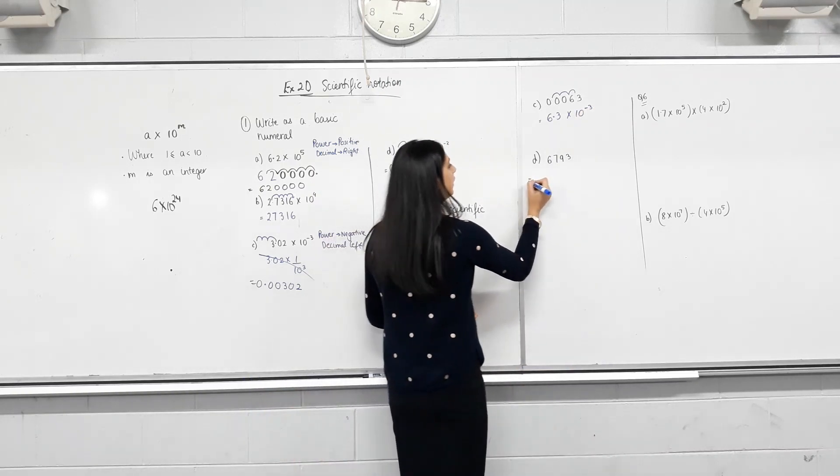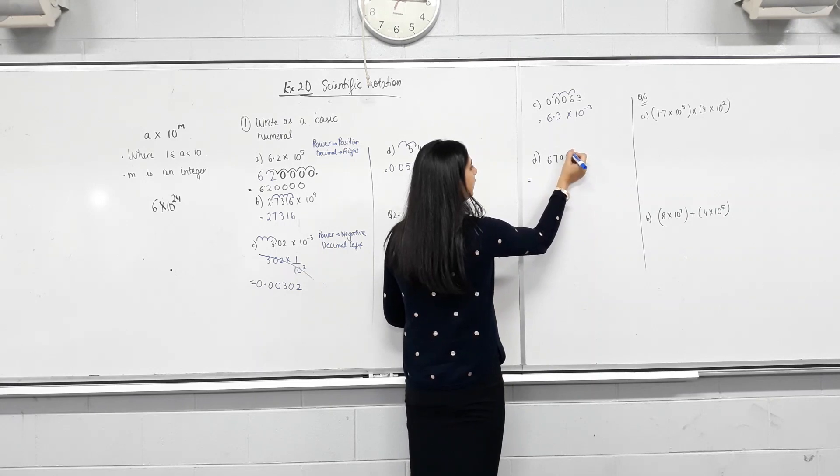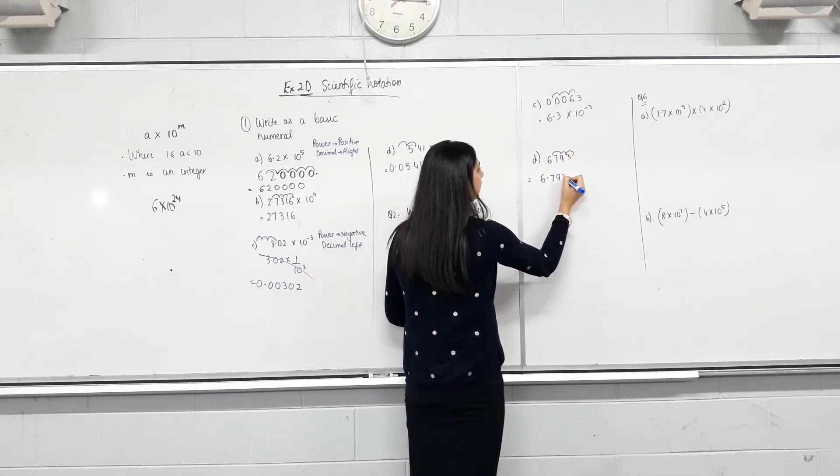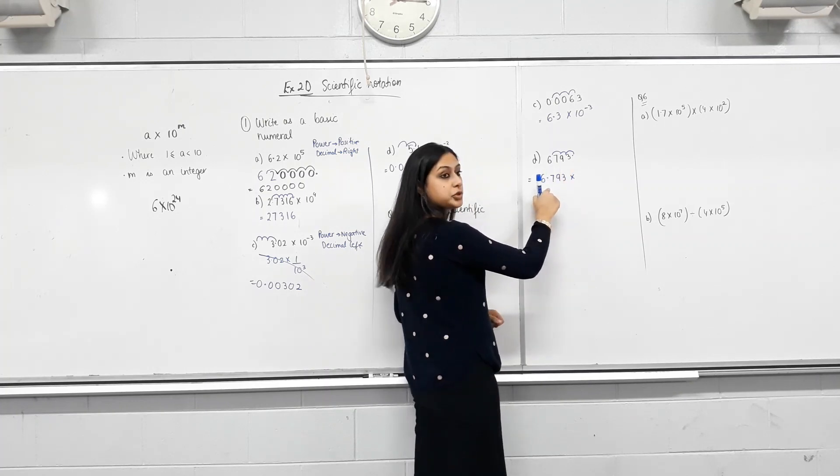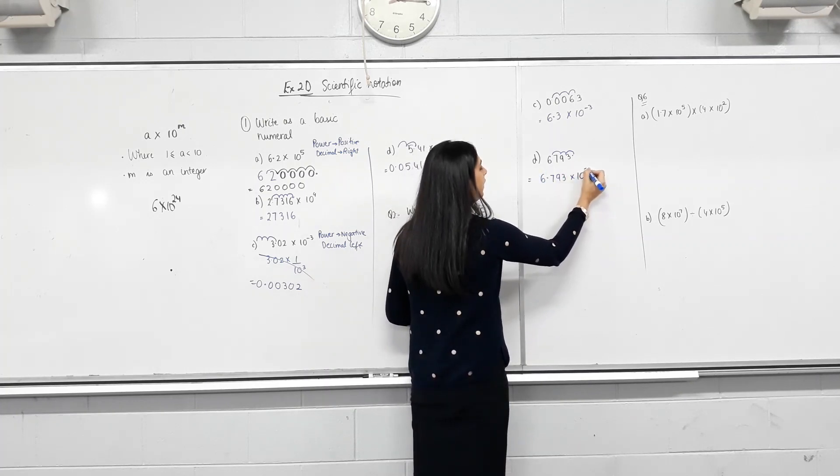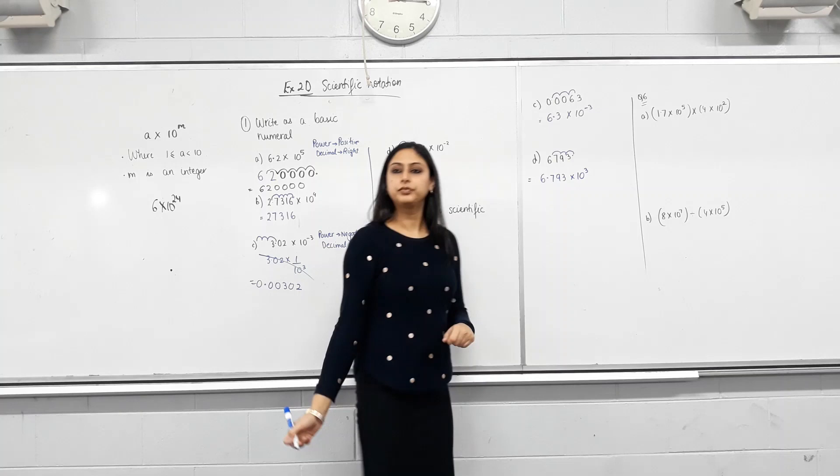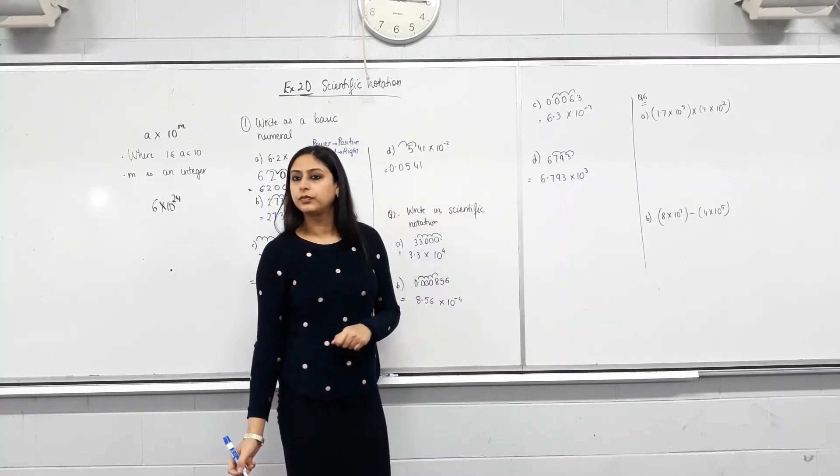Let's try this one. So the decimal is here. I need to move it 1, 2, 3. How many places? 3 places. But haven't I made it smaller? So the power will be positive. Make sense?